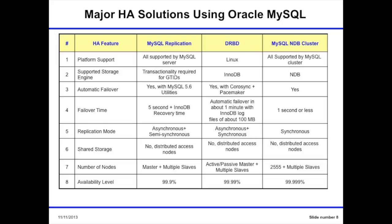MySQL at Oracle uses essentially three major technologies for high availability on Linux: MySQL Replication, DRBD, and NDB Cluster. All of them perform quite well, but they have differences — most importantly in availability level. MySQL Replication at the level of 5.5, before 5.6, is only three nines. DRBD is higher, and NDB Cluster even higher. But every advantage has a side effect, and all of those technologies have a different balance.